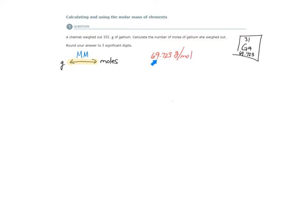Molar mass is numerically equivalent to atomic weight. So if I look at the periodic table, this is the atomic weight or average atomic mass of gallium. So the molar mass of gallium is the same number,